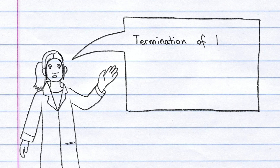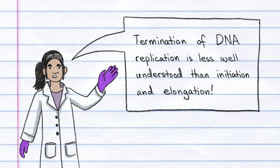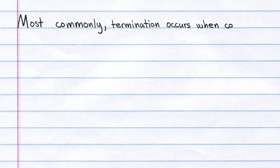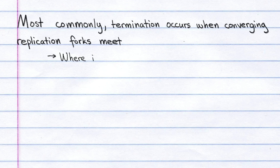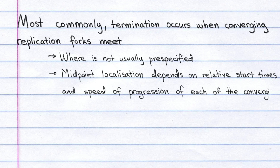Termination of DNA replication is less well understood than initiation and elongation. Most commonly, termination occurs when converging replication forks meet. Where the replication forks meet is not usually pre-specified; such midpoint localization depends on the relative start times and speed of progression of each of the converging replication forks.